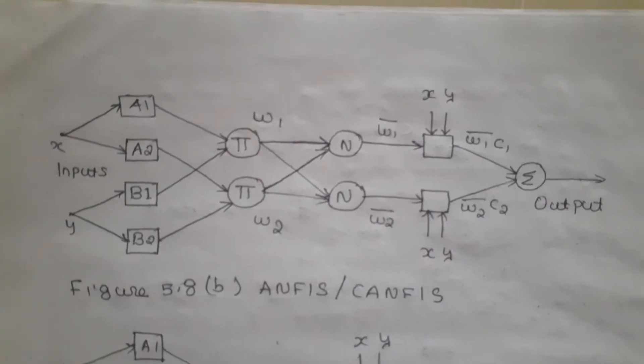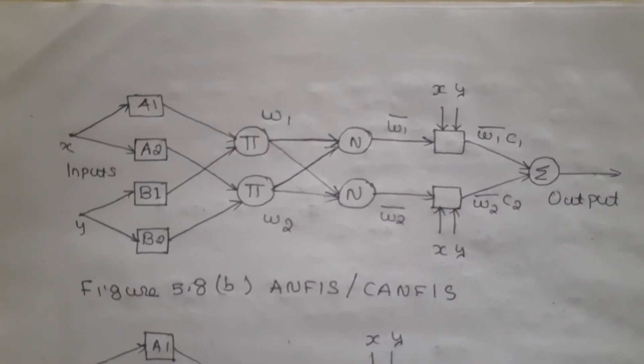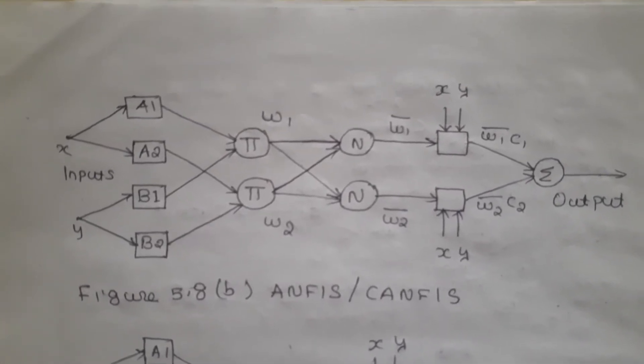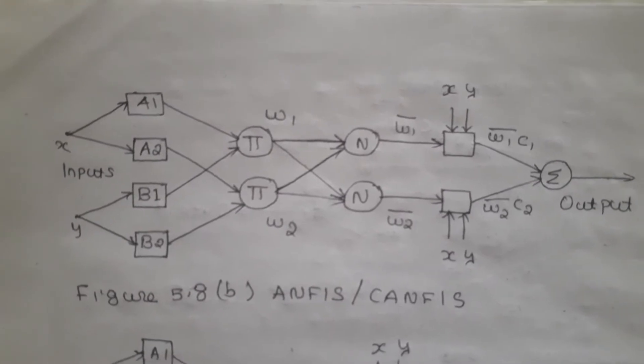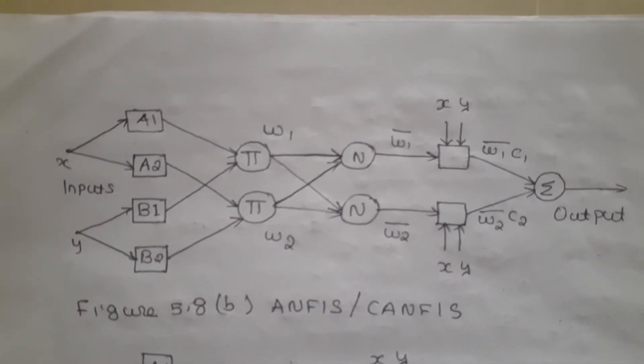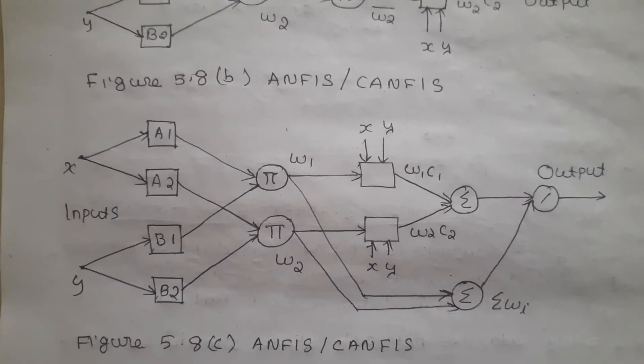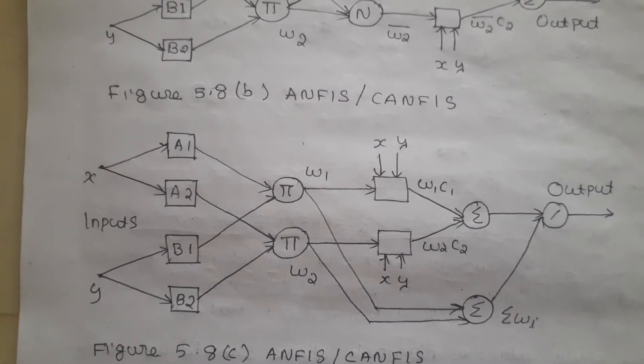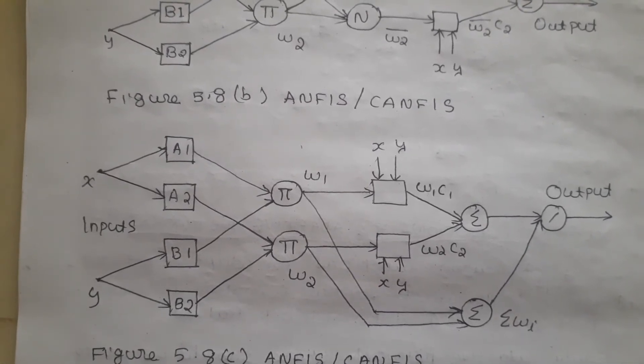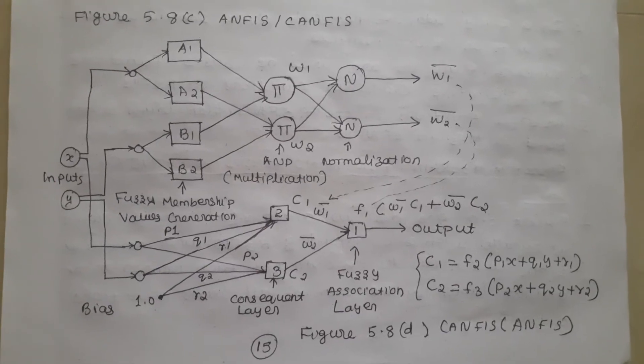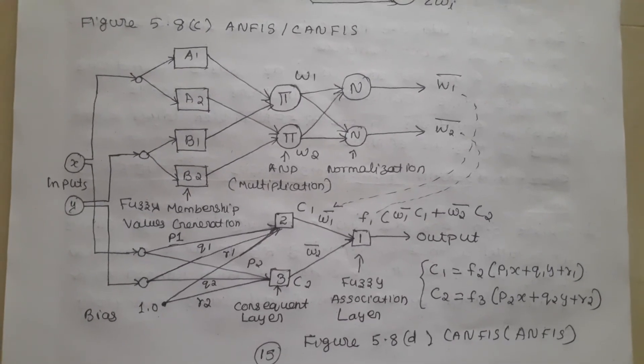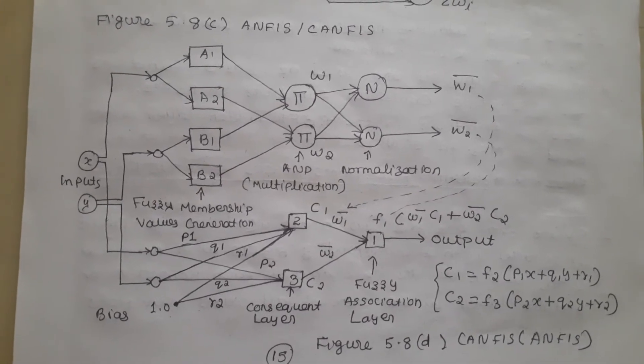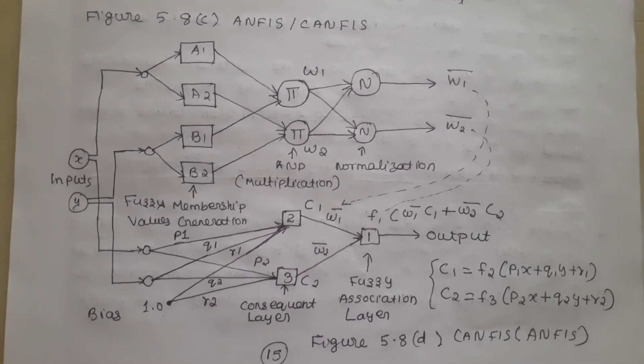A single output CANFIS can be illustrated in the schematic diagrams of ANFIS as in figure 5.8B. This is also a single output CANFIS in the same schematic diagrams of ANFIS. See this figure 5.8D. When all 3 neurons that is 1, 2, 3 have identity functions.